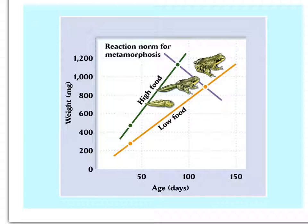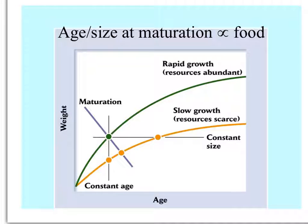These two cases are reaction norms for metamorphosis. Tadpoles maturing in high-food environments make bigger frogs, but some species maintain a constant adult size, meaning the difference in maturation age is even more pronounced.